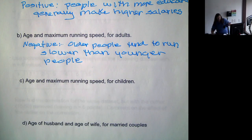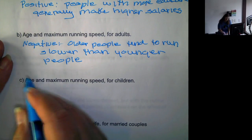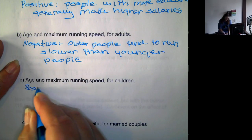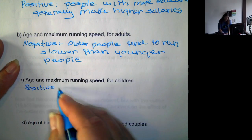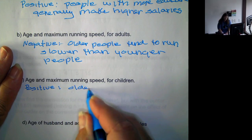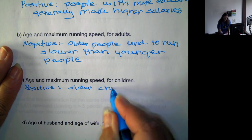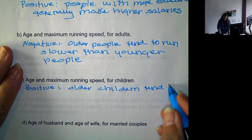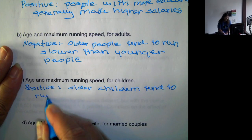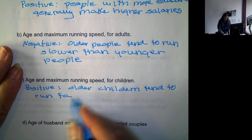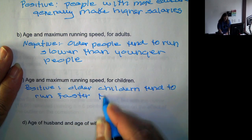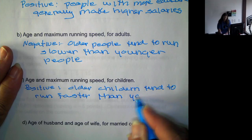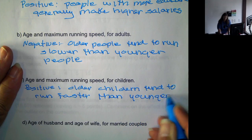Now, however, age and maximum running speed for children, it's going to be the opposite. Younger children run slower than older children. So this would be a positive association because older children, such as 12-year-olds, tend to run faster than younger children, such as 4-year-olds.